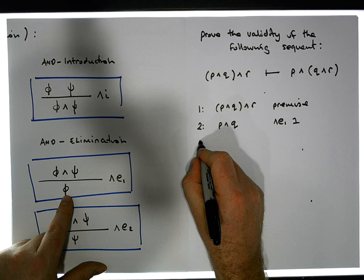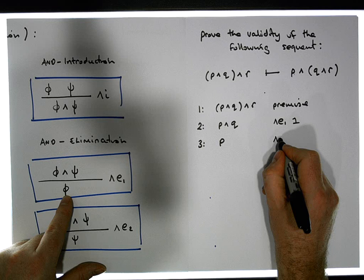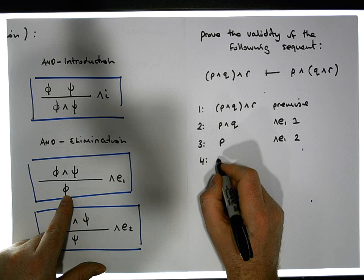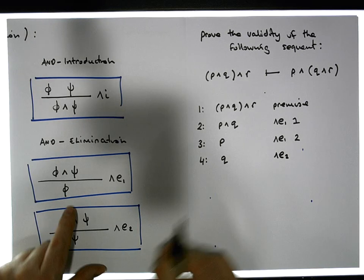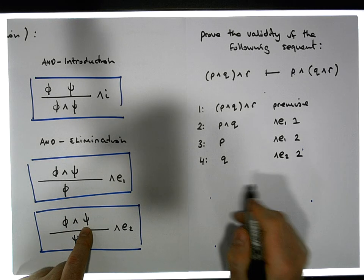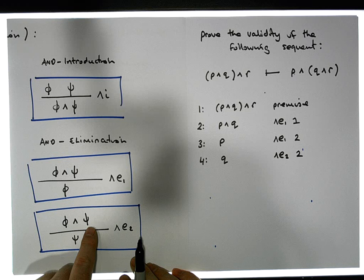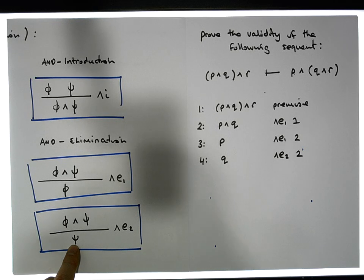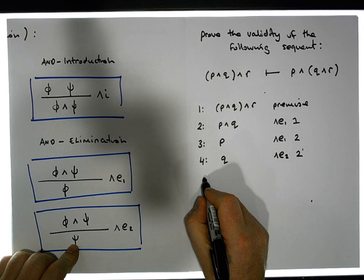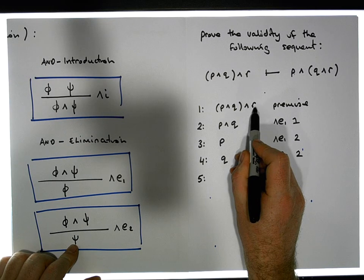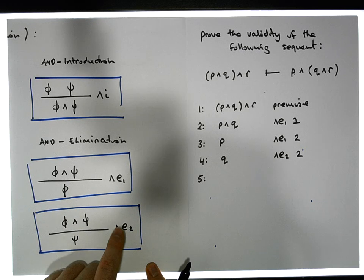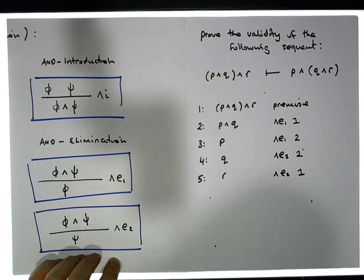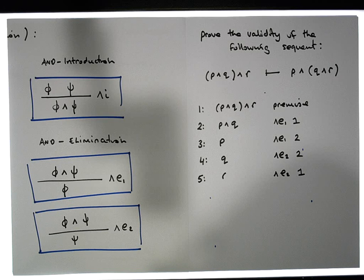From line two we can release p — AND elimination rule one applied to line two gives us p on step three. Then we can release q: AND elimination rule two applied to line two gives us q on step four. We can also release r — the right operand of the original AND — using AND elimination rule two applied to line one, giving us r on step five.